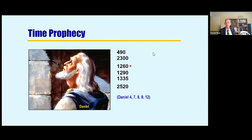And there you see the subject. It is time prophecy. Now you have listed on the right side six time prophecies that come from the book of Daniel.